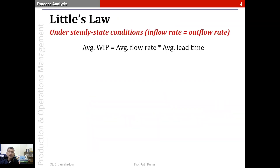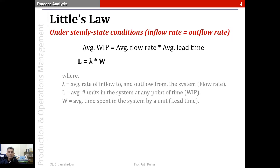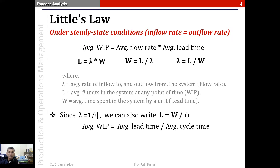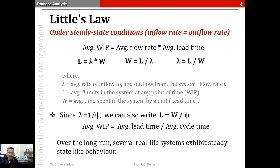Little's Law tells us that the average WIP equals the average flow rate multiplied by the average lead time, under steady state conditions. Mathematically: L = λW, where L is the average WIP, λ is the flow rate, and W is the lead time. This can be rearranged to find any one parameter given the other two. Since λ = 1/ξ where ξ is the cycle time, Little's Law can also be written as L = W/ξ — average WIP equals average lead time divided by average cycle time.